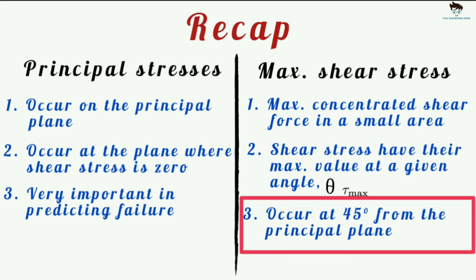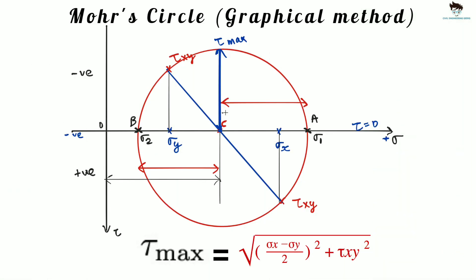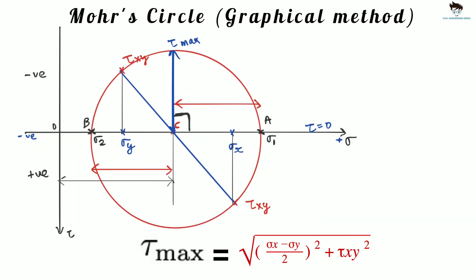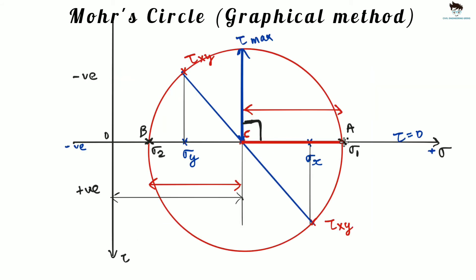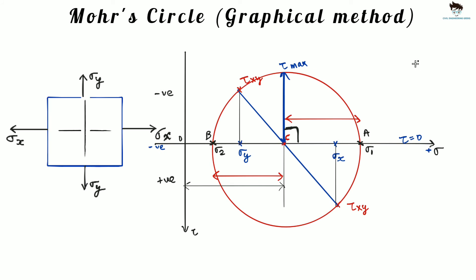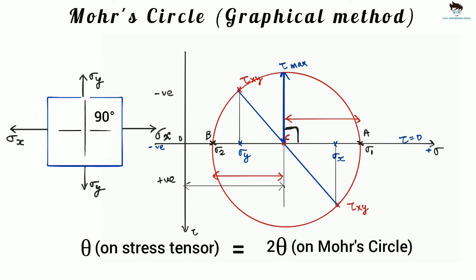The maximum shear stress occurs at the radius of the Mohr's circle, and it occurs at the plane 45 degrees from the major principal plane. On the Mohr's circle, the major principal plane is 90 degrees from the plane where maximum shear stress occurs. This is because the angles in Mohr's circle are double compared to the angle of the plane in the stress tensor — since there is 180 degrees between sigma x and sigma y on the circle, versus 90 degrees on the actual stress tensor. This is why we use the 2θ notation: theta is the angle of the plane, and 2θ is the corresponding angle on the Mohr's circle.